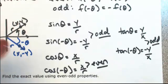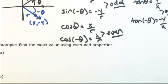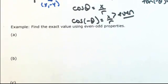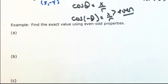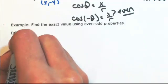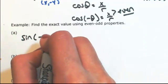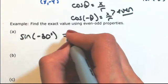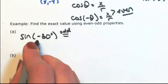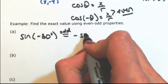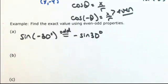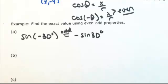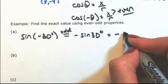Using this concept, let's find exact values using even-odd properties. For example, sine of -30°. Since sine is odd, the negative comes out front. Evaluate sin(30°) and put a negative on it: -1/2.